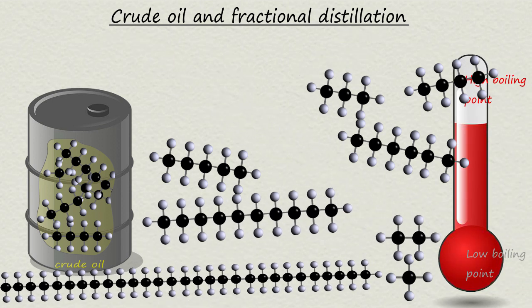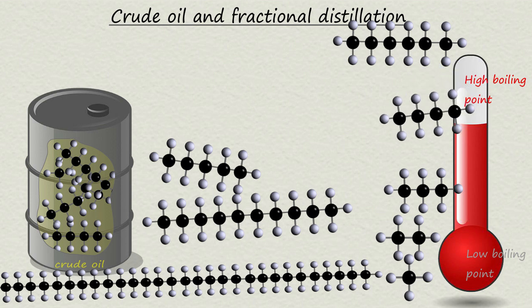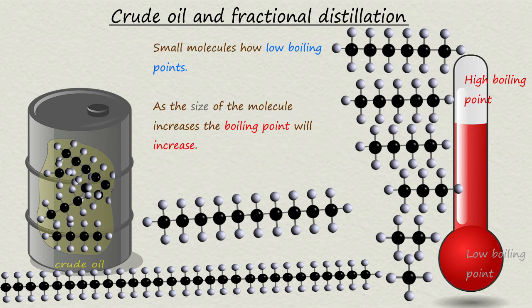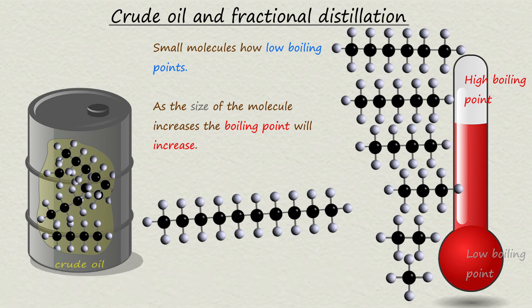Now small hydrocarbon molecules such as methane and ethane have very low boiling points. But as the molecules get larger, their boiling points increase. We can use the technique of fractional distillation to separate out a mixture of substances with different boiling points into parts or fractions which contain molecules with similar boiling points.